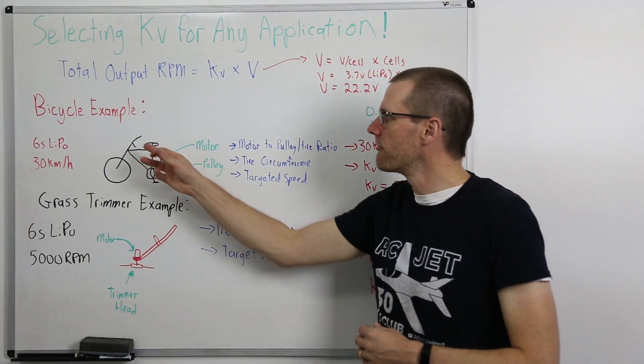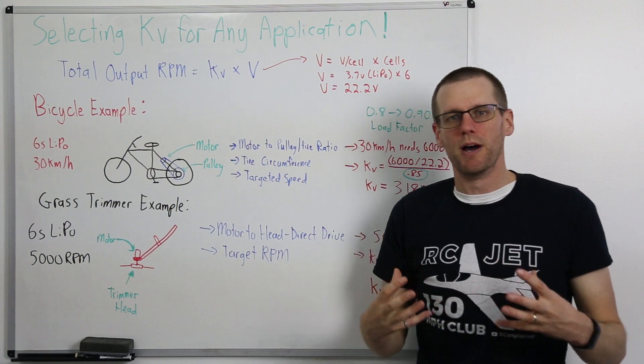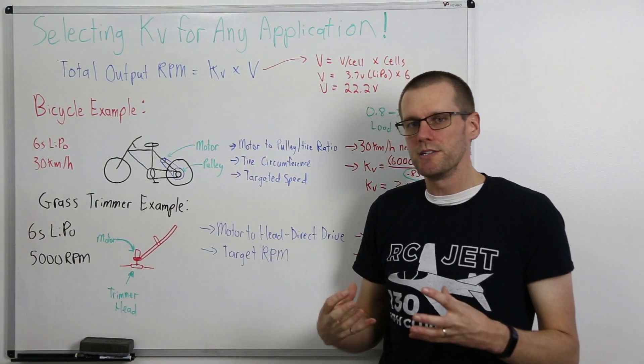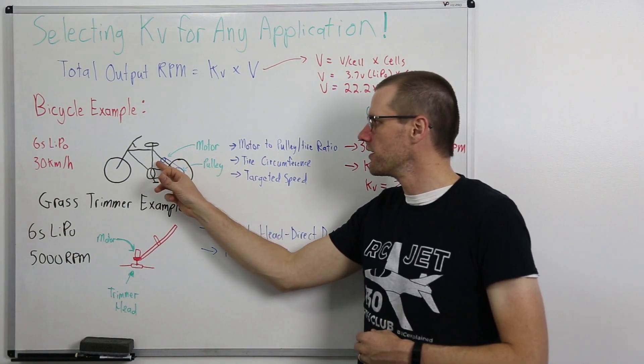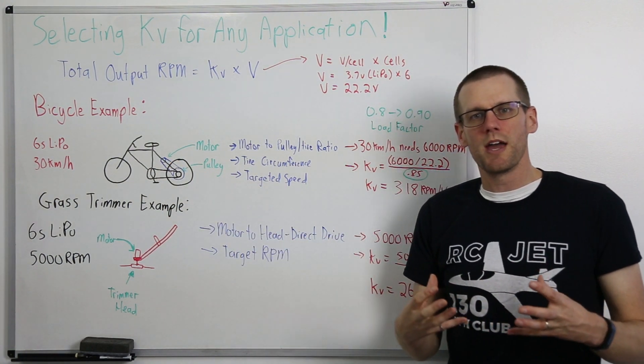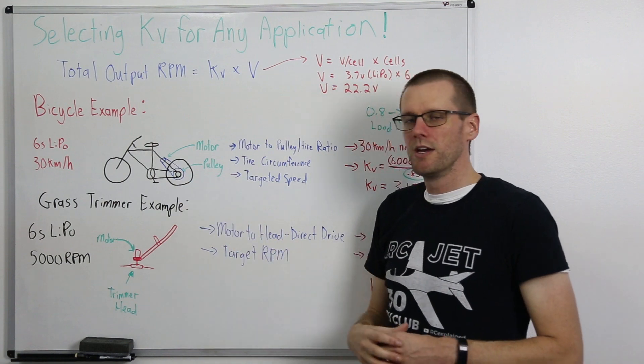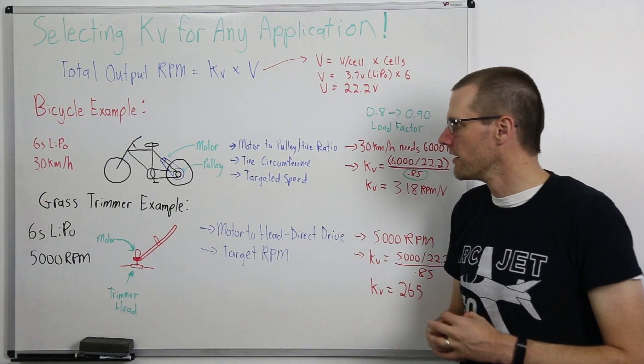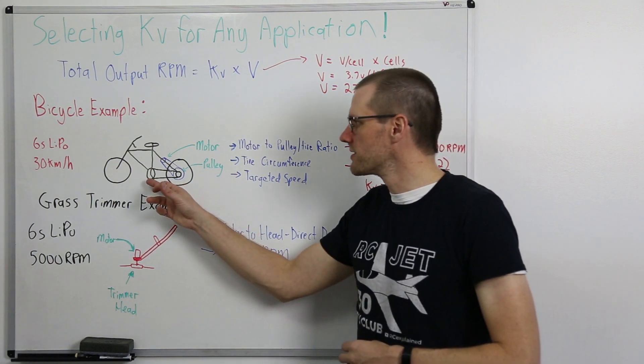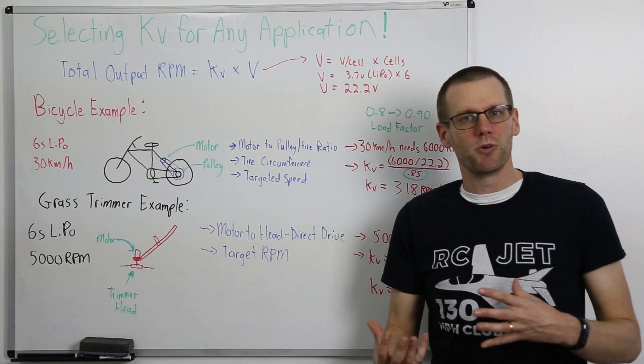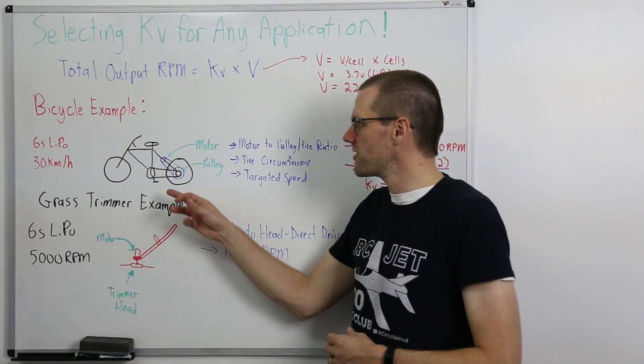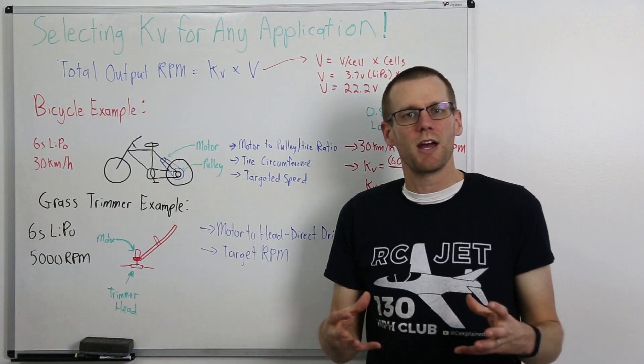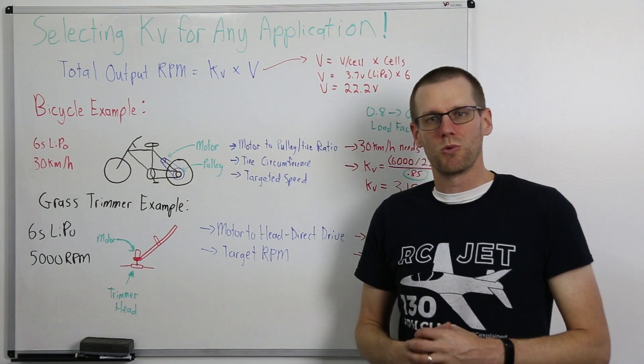Let's jump right into our first example and that's going to be the bicycle example. We have an image here that represents our bicycle and we place a motor right here up in blue and we're going to run a belt drive all the way down to a pulley that is located and directly mounted to the tire. Now if you want to see a video on us taking a brushless motor from the radio controlled hobby and strapping it to a bicycle, let me know in the comment section below. Maybe we can have this as a project for 2022.